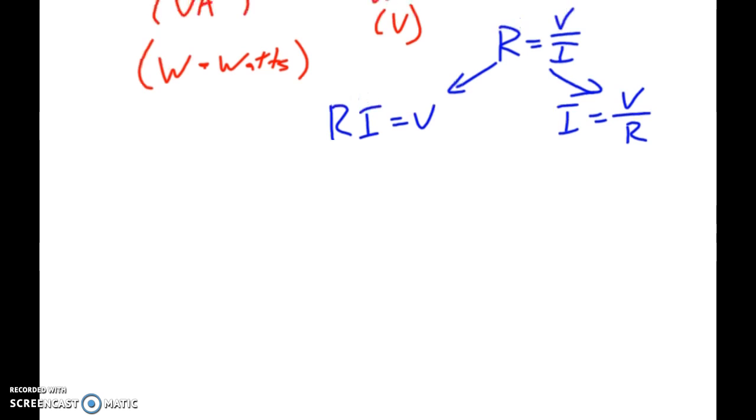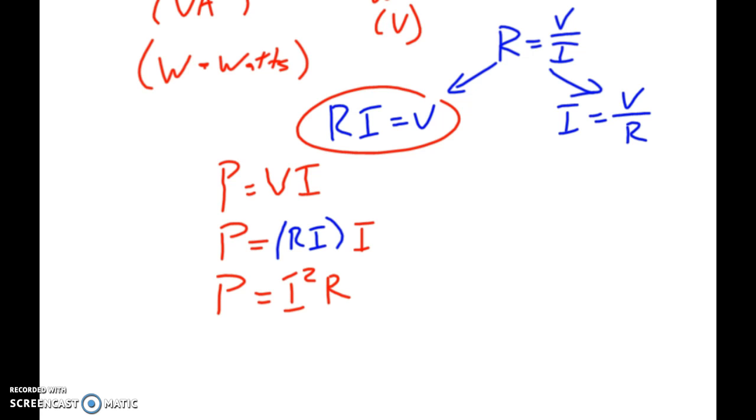So if we use this, we'll pick on this equation first. And we plug that into power is equal to voltage times current. What we can do is we can see that power becomes equal to resistance times current times current. And if we simplify that, power becomes equal to I squared times R.